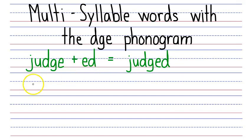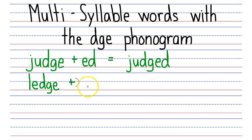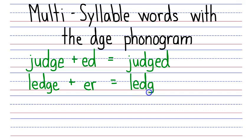Now let's take ledge and add the syllable UR. We have an L that says ul, the E that says eh, and a DGE that says J, and we want to add the syllable ER that says ur. We just drop the silent E in ledge and we get L, E, D, G, E, R — ledger.